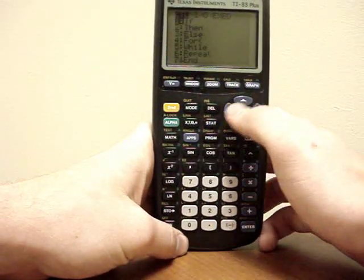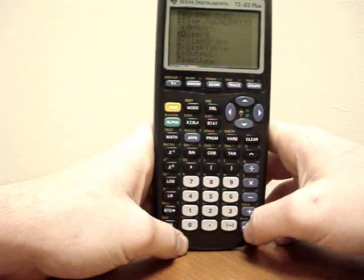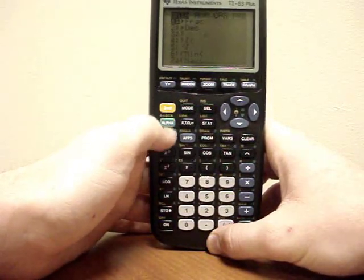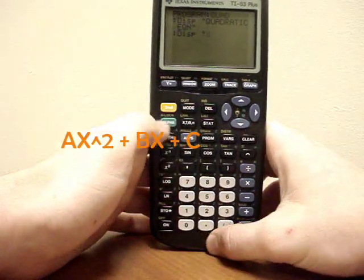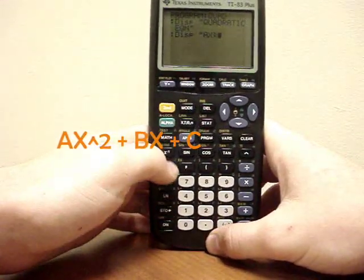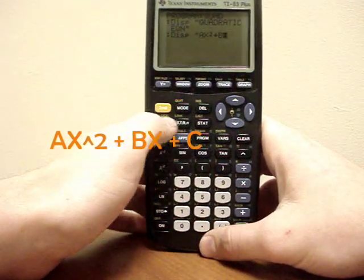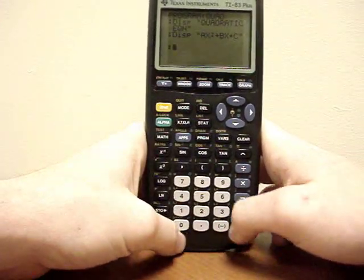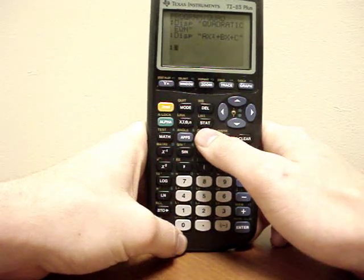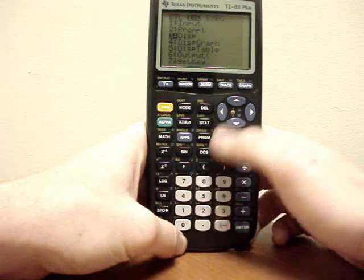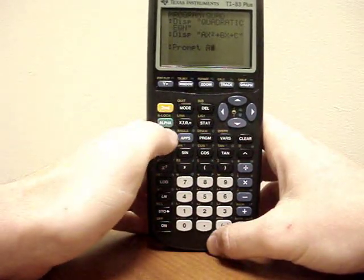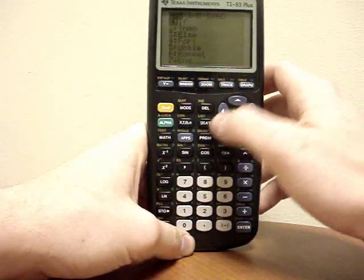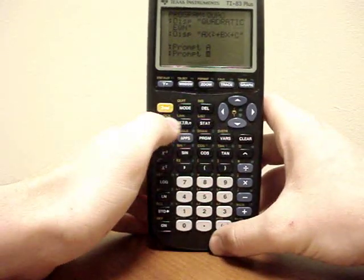Now we are going to put in another display function, so press program, go over to input, output, and go down to display. Within quotation marks we are going to type in a generic quadratic formula: alpha A, alpha X squared, plus alpha B, alpha X, plus alpha C, inside quotation marks. Then press a new line, go to program, select input, output, and we will do prompt. Using prompt A will show A and ask for a value for that variable. We are going to do the same thing for B and C so we can put in all the different coefficients.